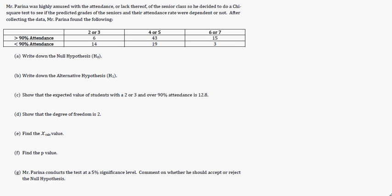In this video, I'm going to go over interpreting a p-value in a chi-squared test. It's new for the 2014 curriculum. They took the critical values out of the formula books, so they'll either give you the critical value, and I'm going to show you how to do that as well, or you need to learn how to interpret a p-value, which is no problem. Mr. Pringham was highly amused with the attendance, or lack thereof, of his senior class, so he decided to do a chi-squared test to see if the predicted grades of seniors and their attendance rate were dependent or not. After collecting the data, Mr. Pringham found the following.